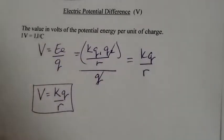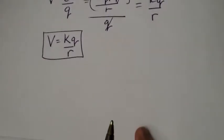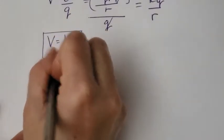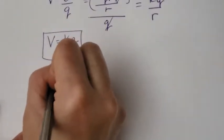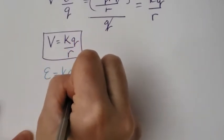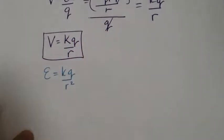We know another formula. We also know the formula electric field intensity. So if you want to find the electric field, we know the formula is KQ over R squared.